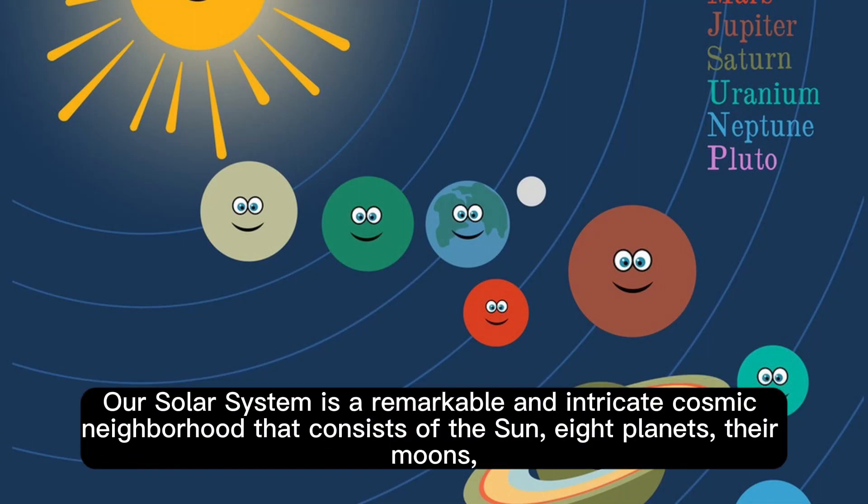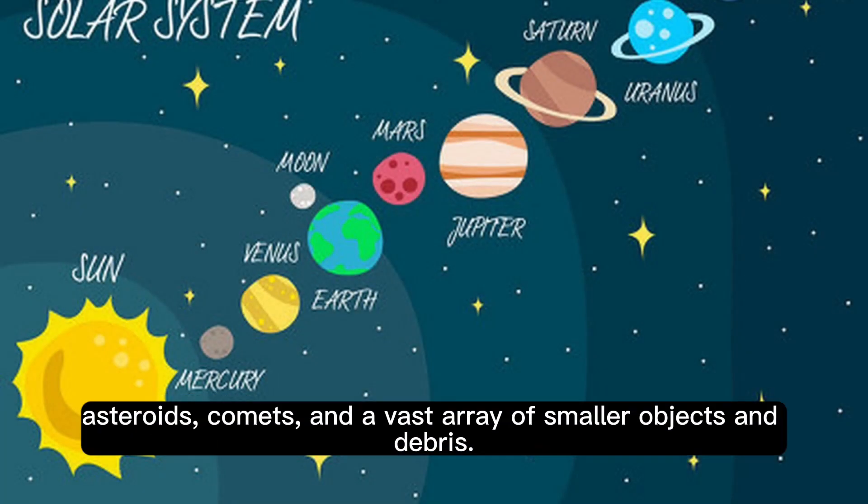Our solar system is a remarkable and intricate cosmic neighborhood that consists of the sun, eight planets, their moons, asteroids, comets, and a vast array of smaller objects and debris.